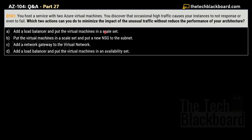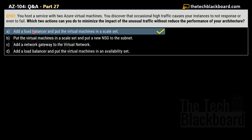The options are: Option A — add a load balancer and put the virtual machines in a scale set; Option B — put the virtual machines in a scale set and add an NSG (network security group) to the subnet; Option C — add a network gateway to the virtual network; Option D — add a load balancer and put the virtual machines in an availability set. The correct answer is Option A: add a load balancer and put the virtual machines in a scale set.